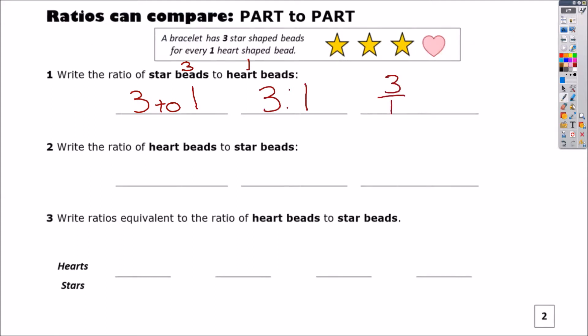Now if you want to try number two and pause the video, that would be a great idea. All right. So write the ratio of hearts, hearts is one, to stars, three. Let's write it all three ways. One to three, one colon three, and one third.